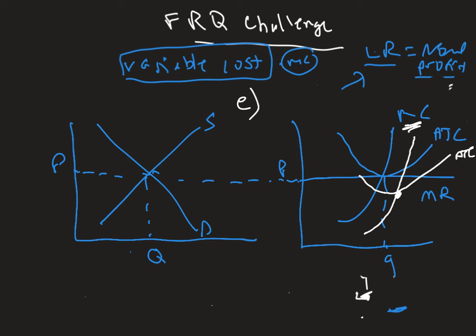We might see the ATC and MC curves shift downward. My minimum point moves, and now I have my updated firm graph. The questions on this ask: what changes will we have for the representative firm's cost curves? We've graphed that. We're only asked about the firm, not the market, although the market supply curve would also shift. What will happen to the output for the firm compared to the previous long run equilibrium?